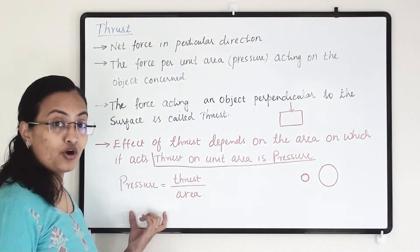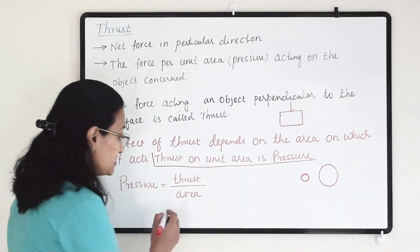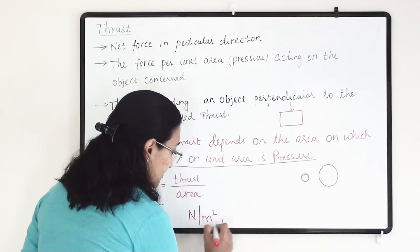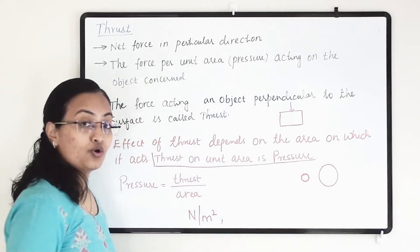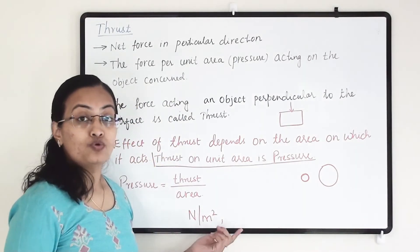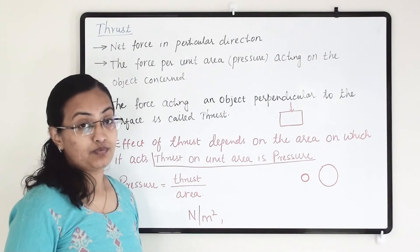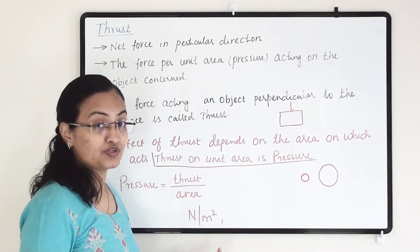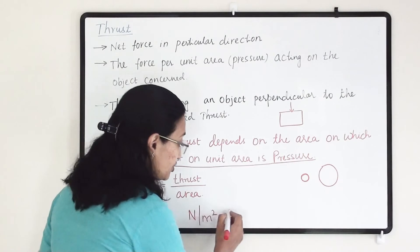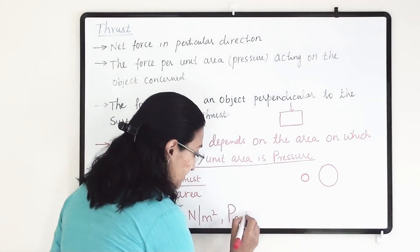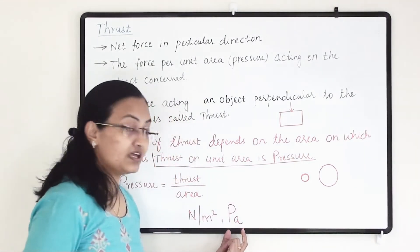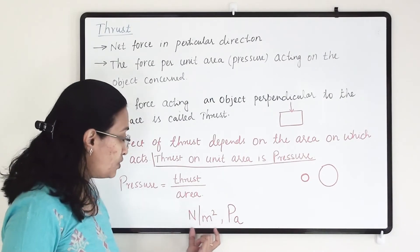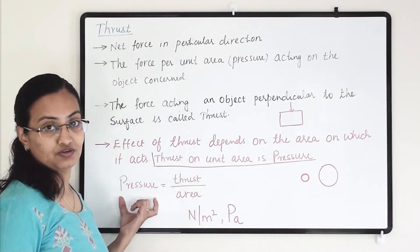The unit of pressure is Newton per meter square. To honor the scientist Blaise Pascal and acknowledge his contribution towards the study of pressure, we have given the unit Pa, which is the short form of Pascal. So these two are the units for pressure.